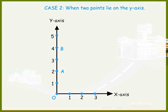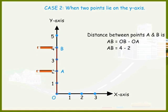Consider the second case when the two points lie on the y-axis. Distance between points A and B is equal to OB minus OA, that is 2 units.